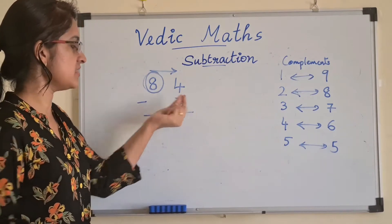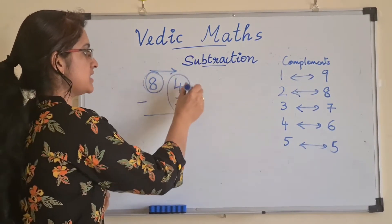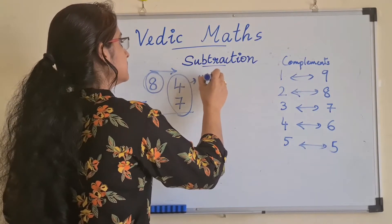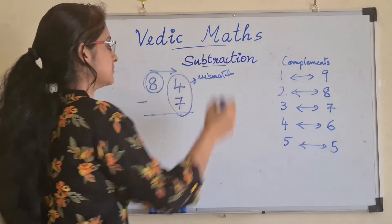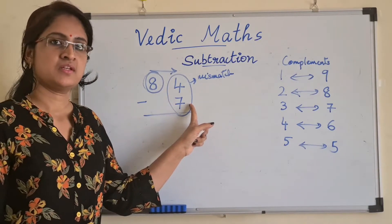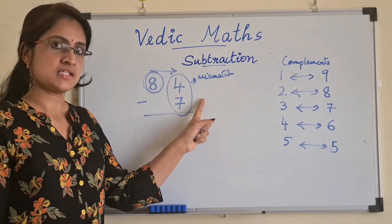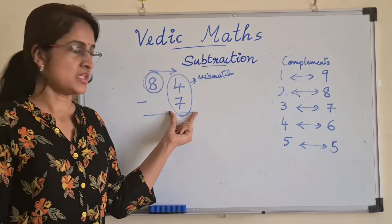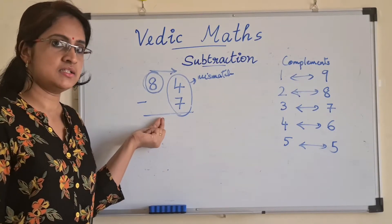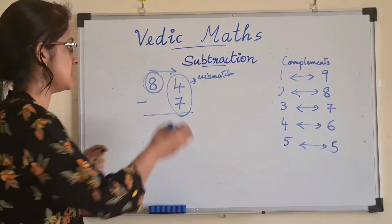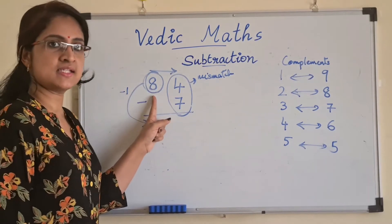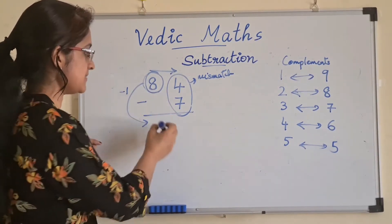We know 4 minus 7 is a mismatch combination. 4 is less than 7. In this case, since this pair is a mismatch combination, instead of writing 8 directly here, you have to subtract 1 from 8, so that 8 becomes 7.